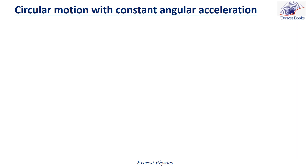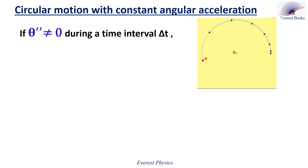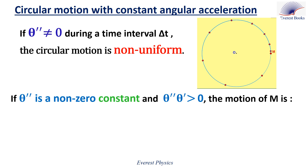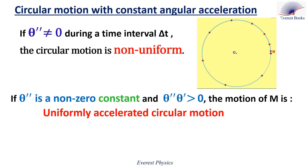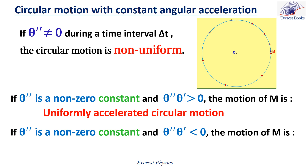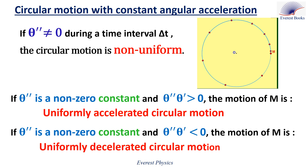In the previous episode we saw that in uniform circular motion the angular acceleration is zero. Now consider a particle moving on a circular path. If the angular acceleration during a time interval Δt is different from zero, then this is called non-uniform circular motion. We will study two types: if θ'' is a non-zero constant and θ'' times θ' is positive, the motion is uniformly accelerated circular motion; if θ'' times θ' is negative, it is uniformly decelerated circular motion.